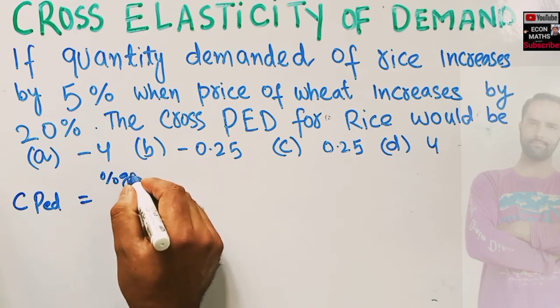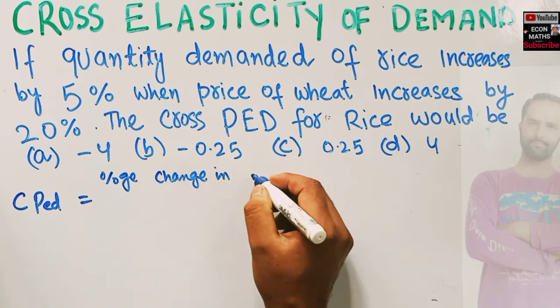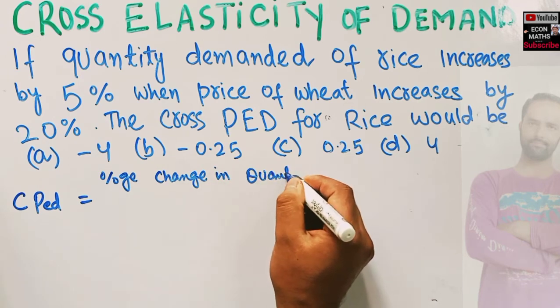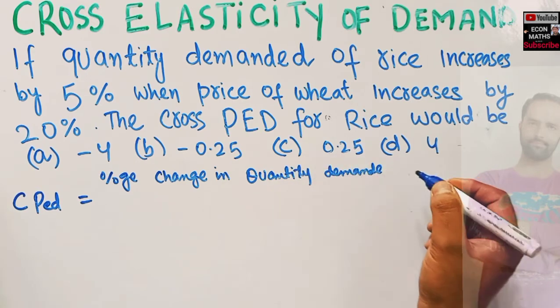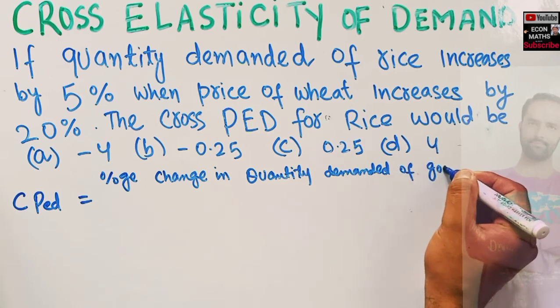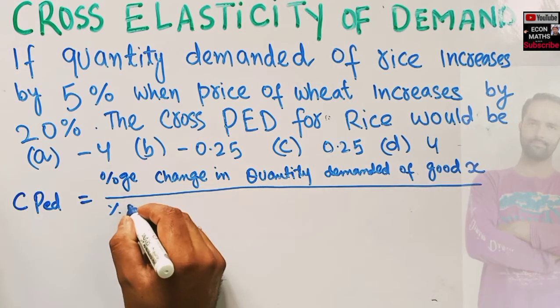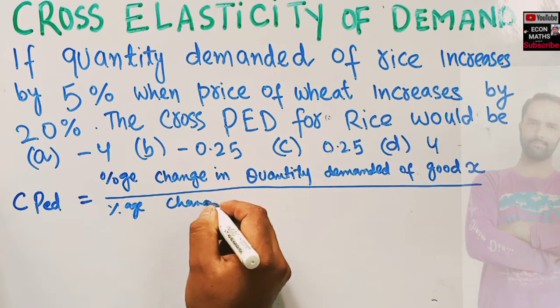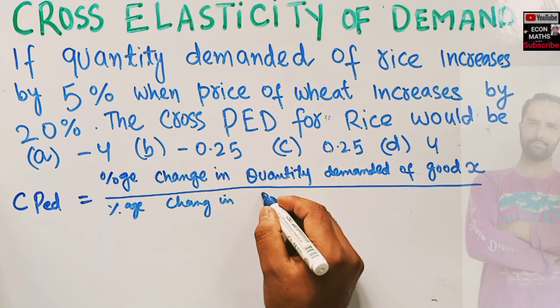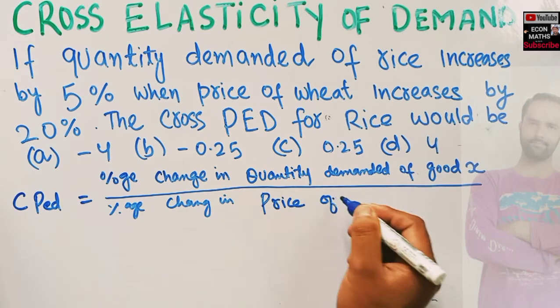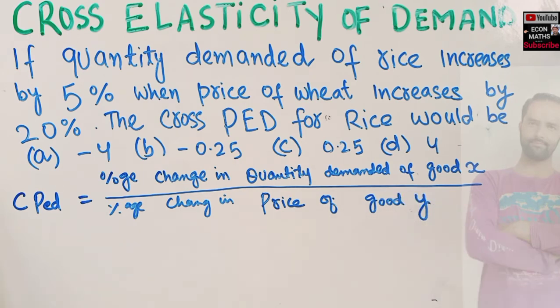percentage change in quantity demanded of good X divided by percentage change in price of good Y. So what we are doing...